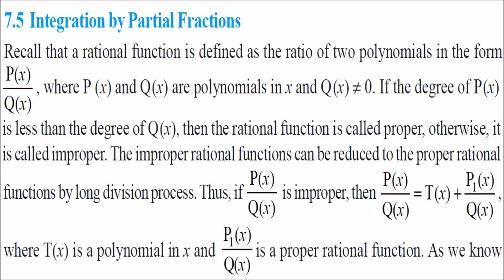Integration by partial fractions: when you have a p(x) by q(x) form, that is the ratio of two polynomials, this is called a rational function. Here p(x) and q(x) are both polynomials and q(x) cannot be zero. If the degree of p(x) is less than the degree of q(x), the rational function is called a proper rational function. Otherwise, if the degree of p(x) is greater than the degree of q(x), it is called an improper rational function.